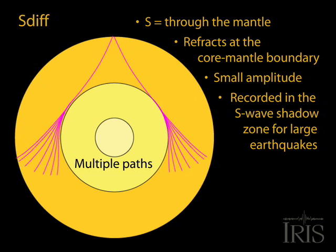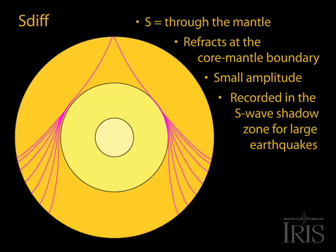They usually have small amplitudes and gradual onsets on seismograms due to the loss of energy as the waves are diffracted by the core mantle boundary.